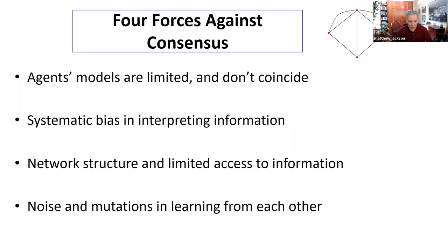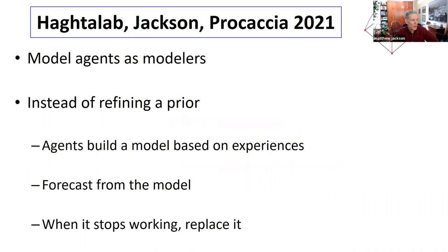The second is that humans tend to have systematic bias in interpreting information, also based on their histories—I'll give you some experimental evidence for that. Third, I'll talk about how network structure works, because people get information through networks, and who they know affects what information they have. The structure of those interactions also affects the noise present in the system, and I think part of the explanation for increased polarization is due to increased noise and reach in these networks.